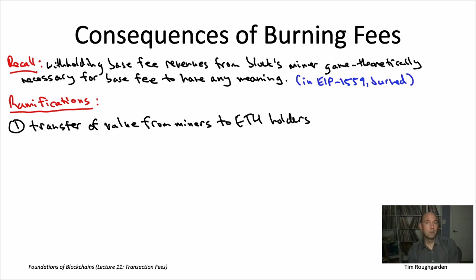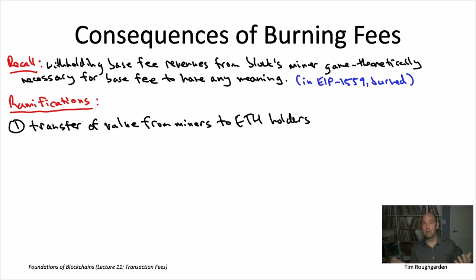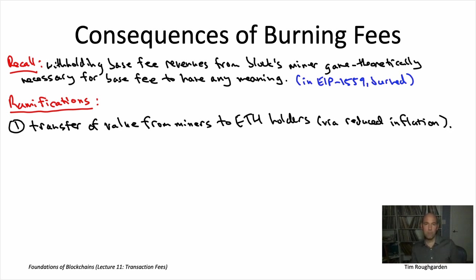To be clear, while base fee revenues are burned, there is still the block reward — two new ethers are minted with every block, which is inflationary. So on one hand, the block reward prints new coins; on the other, the burned base fee revenues take coins away. To date, the aggregate effect has been to decrease Ethereum's inflation rate from roughly 4% to about 2%. But the principle is the same: because you're not printing coins as rapidly as pre EIP-1559, the switch should be beneficial to all holders of Ethereum's native currency.